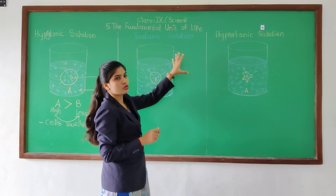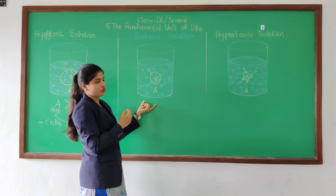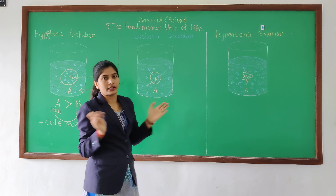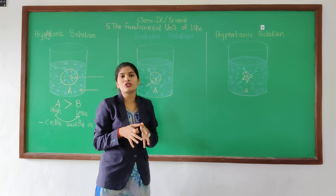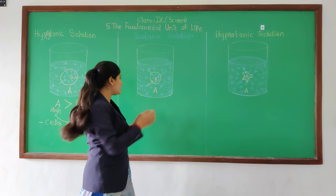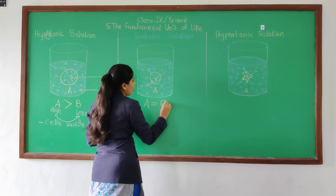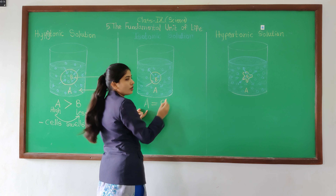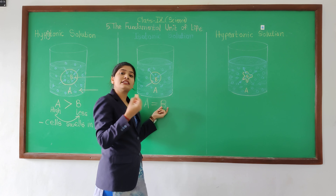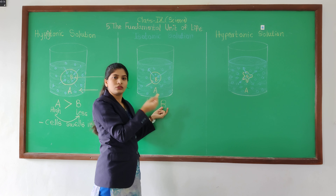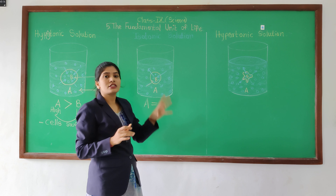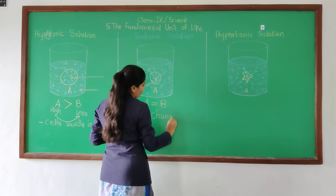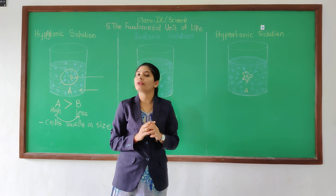Next is isotonic solution. What is happening in isotonic solution? See the arrows — two arrows are going inside and two arrows are going outside. Means the concentration is the same in both environments, meaning A is equal to B. The concentration outside is the same as the concentration of water present inside the cell, so there is no movement of water molecules.